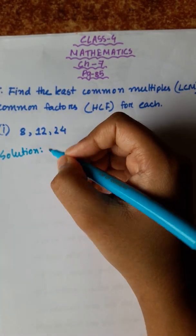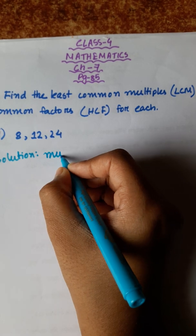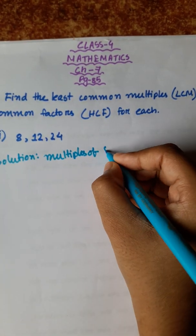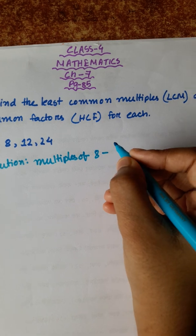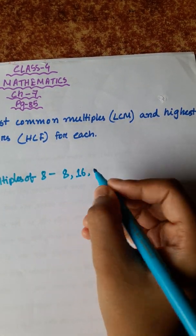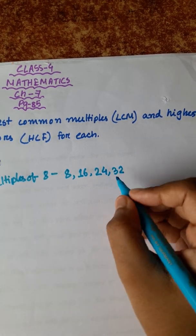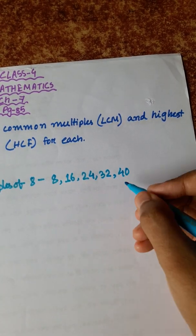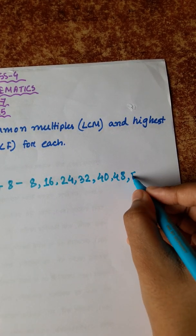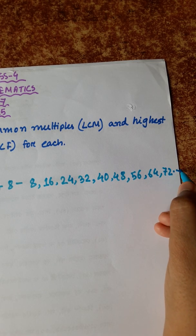Let's start with multiples, then common multiples. Multiples of 8 are: 8, 16, 24, 32, 40, 48, 56, 64, 72, and so on.